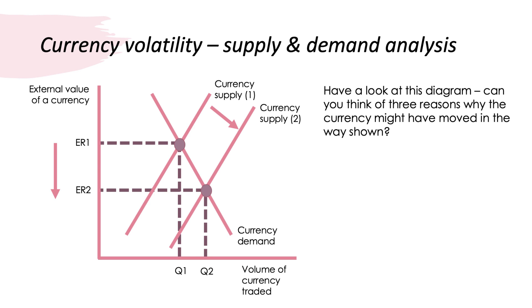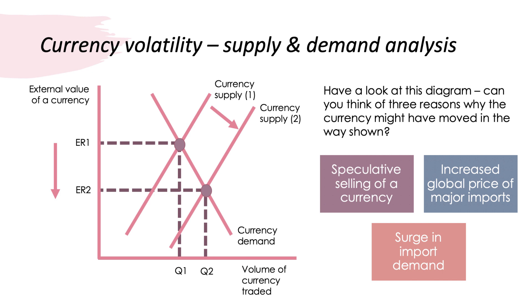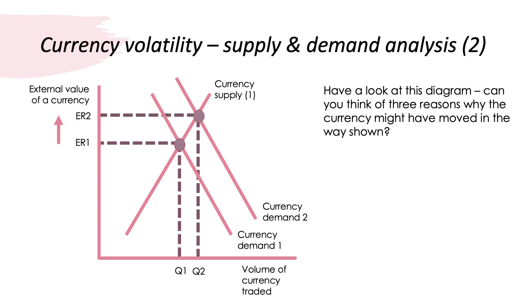The currency has fallen in value — the currency supply shifted outward from CS1 to CS2, causing a movement down the demand curve and a fall in the external value. This could be because speculators grew nervous and started selling the currency into safer assets; or because a major rise in the world price of an import (like oil or foodstuffs) meant the country had to supply more currency to pay for it; or because a consumer boom led to increased import spending, which involves selling domestic currency.